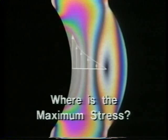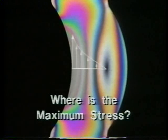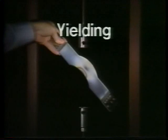In addition to providing immediate information about the location of maximum stress in the part, photostress can provide answers to other important design questions. Photostress immediately identifies the extent and magnitude of localized yielding. As long as stress levels remain in the elastic range, the colors disappear when the test load is removed. But where the elastic limit is exceeded and permanent deformations exist, the color pattern remains.